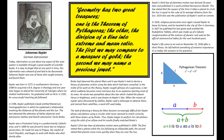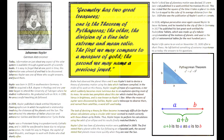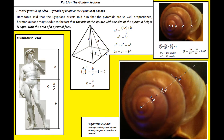Let's restate the great quote from Johannes Kepler: 'Geometry has two great treasures. One is the theorem of Pythagoras, the other the division of a line into extreme and mean ratio. The first we may compare to a measure of gold, the second we may name a precious jewel.'